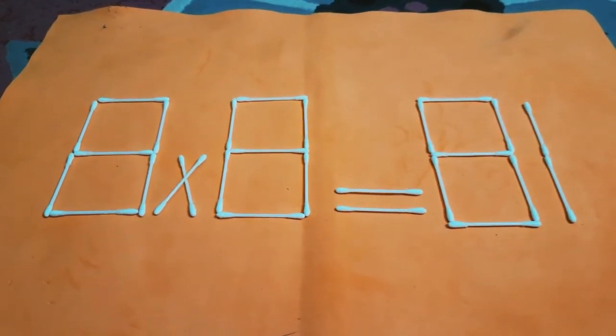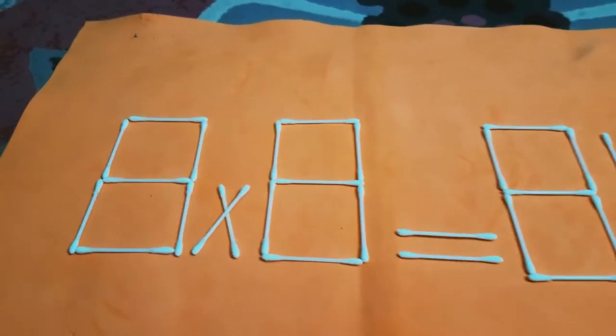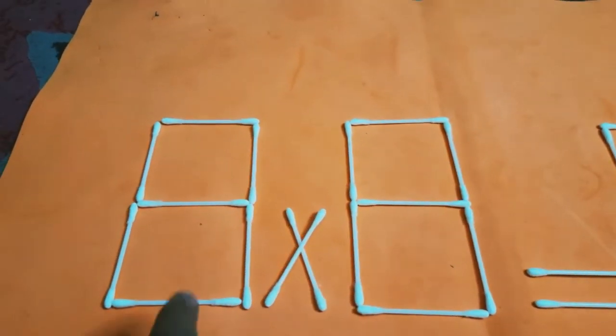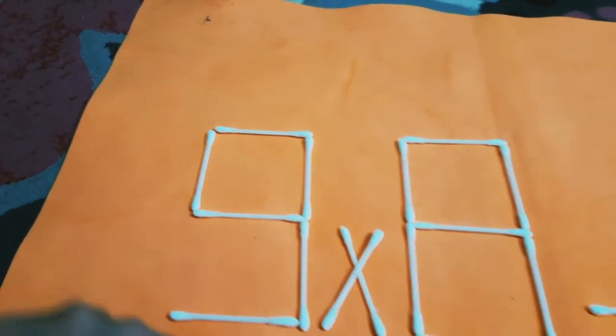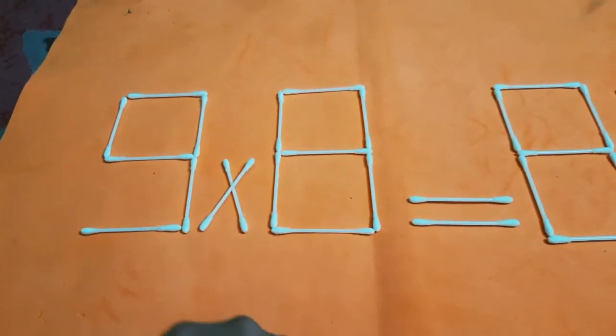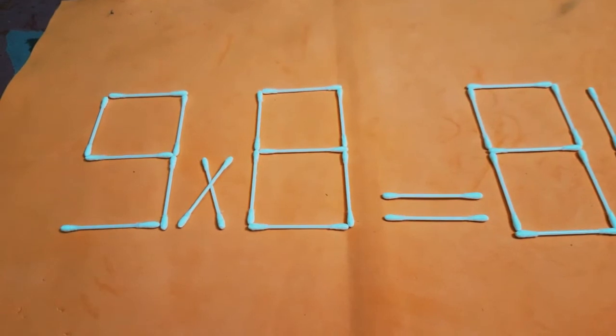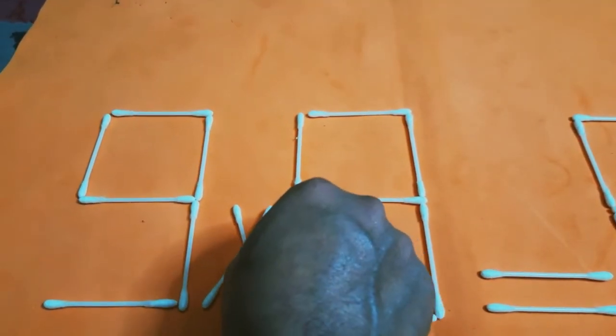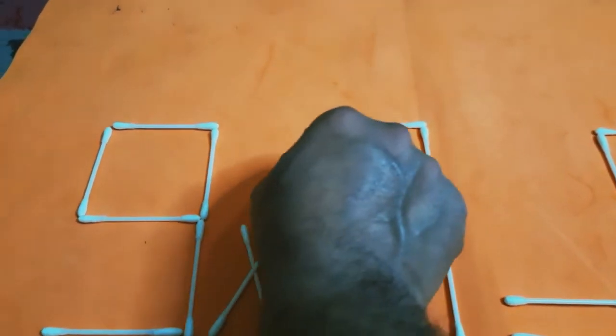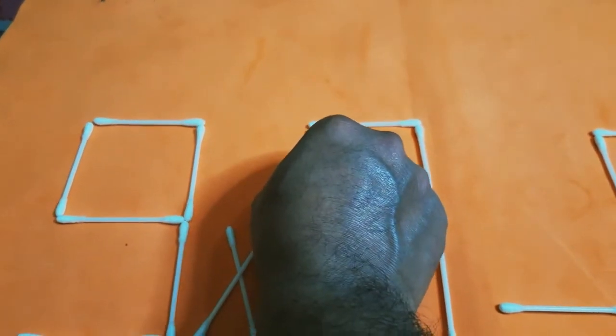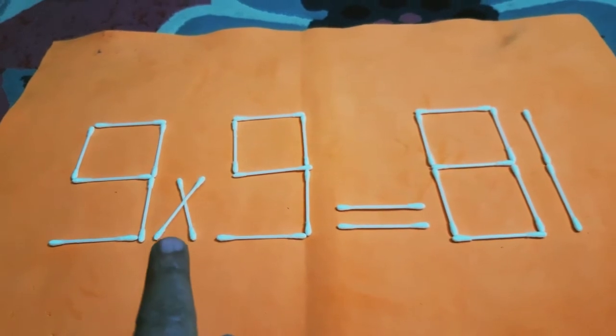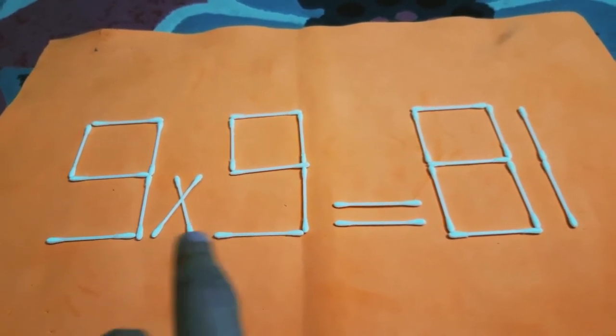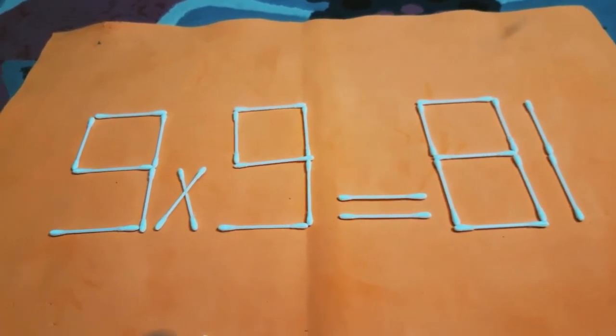This is the first stick, we remove it. What about the second stick? This is the second stick. Now we have nine times nine. If you refer to the multiplication table, you will find that nine times nine equals 81.